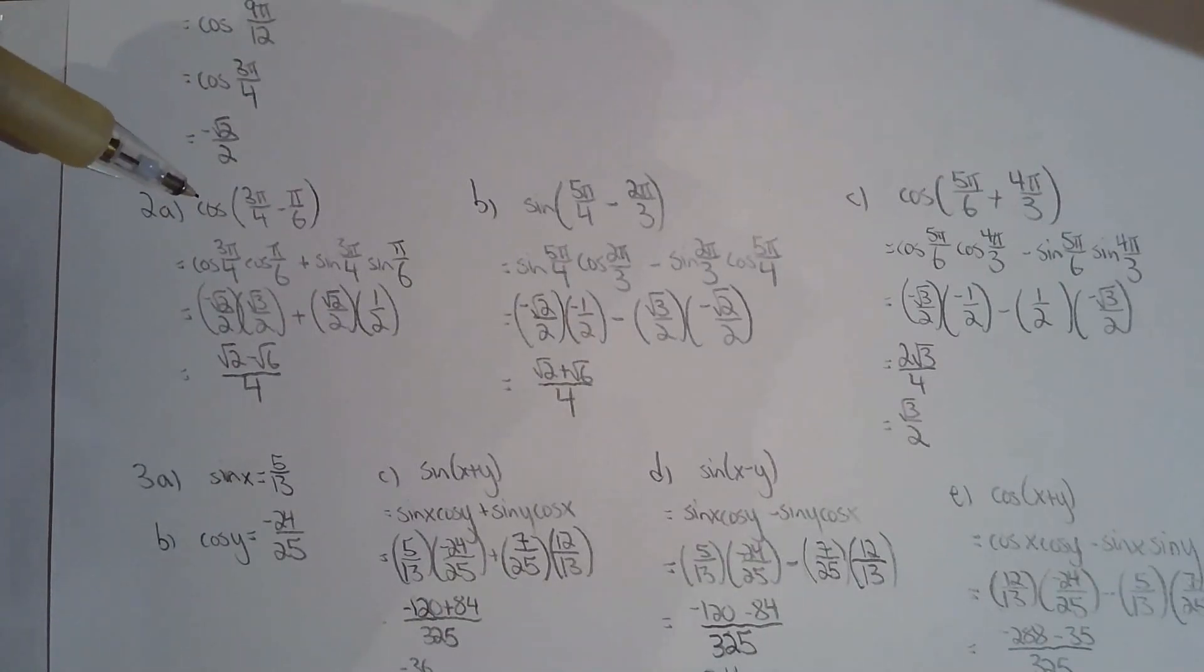But anyways, for 2a, use the subtraction formula for cosine. And then find the exact value for each of these angles. So cosine of 3 pi over 4 is negative root 2 over 2 and so forth and so on. And then do the calculation.